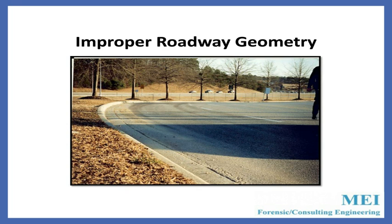Improper roadway geometry: everyone is familiar with a horizontal curve. Vertical curves give you that funny feeling in your stomach as you go over them too fast. In this particular case, not only do you have a horizontal curve going to the left, but the road also slopes to the left, and there is a vertical curve in this location. As a result, the tires lost their traction and a young woman was killed.